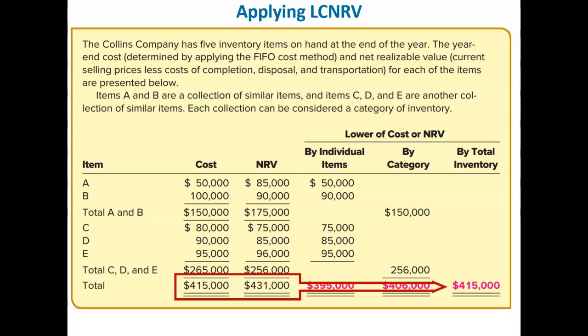As shown in the illustration, applying lower of cost or net realizable value to groups of inventory items will cause a higher inventory valuation than if applied on an item-by-item basis. The reason is that the group application permits increases in the net realizable value of some items to be offset by decreases in others. Each approach is acceptable but should be applied consistently from one period to another.